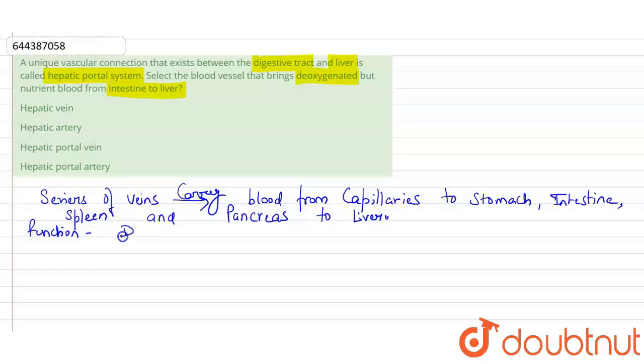Its main function is to deliver deoxygenated blood to the liver for detoxification, and then it returns to the heart.